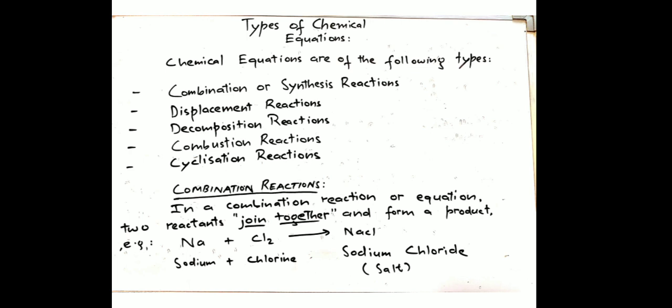Now we will see what types of chemical equations there are: combination or synthesis reactions, addition reactions, displacement reactions, decomposition reactions, combustion reactions, cyclisation reactions, precipitation reactions, neutralization reactions, and some other types of reactions.